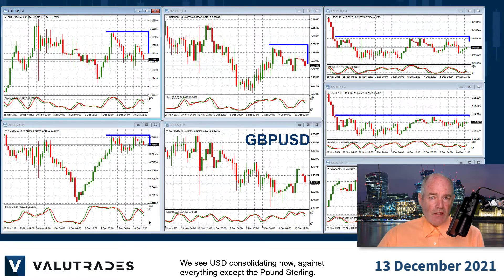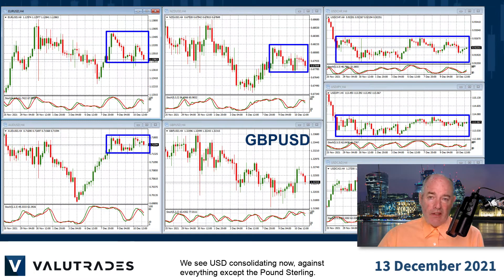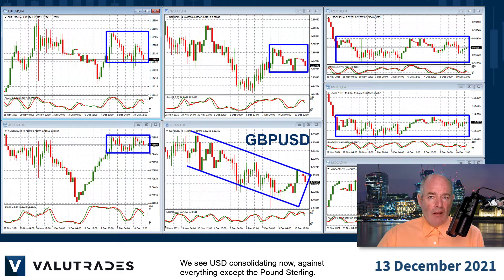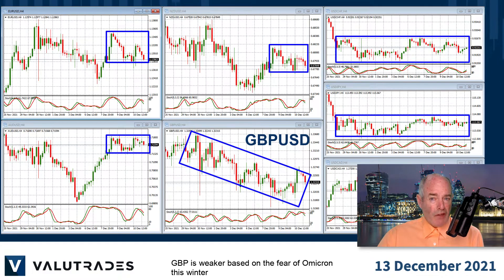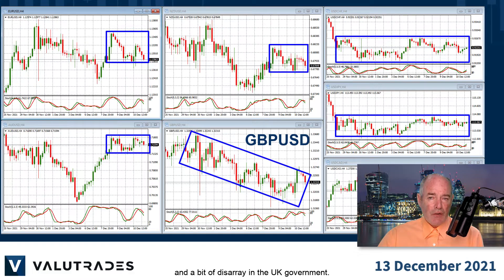We see USD consolidating now against everything except the pound. GBP is weaker based on the fear of Omicron this winter and a bit of disarray in the UK government.